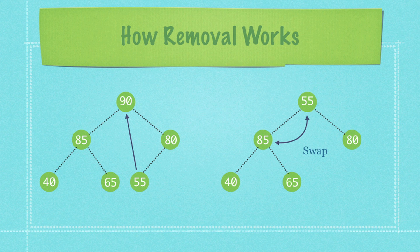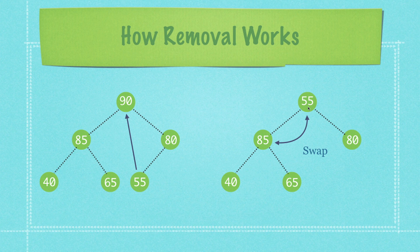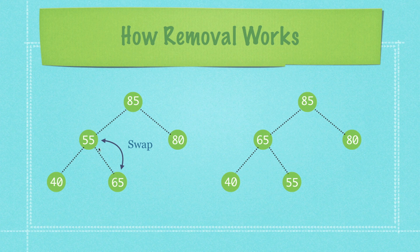So how exactly does a removal of a node work inside of a heap? Well we're just simply going to pop off the root node, then move up the last item inside of our heap into that position. Then we're going to switch 55 with 85 because 85 is larger than 55, and then we're going to take 55 and switch it with 65. And that is how removal of a node inside of a heap works.